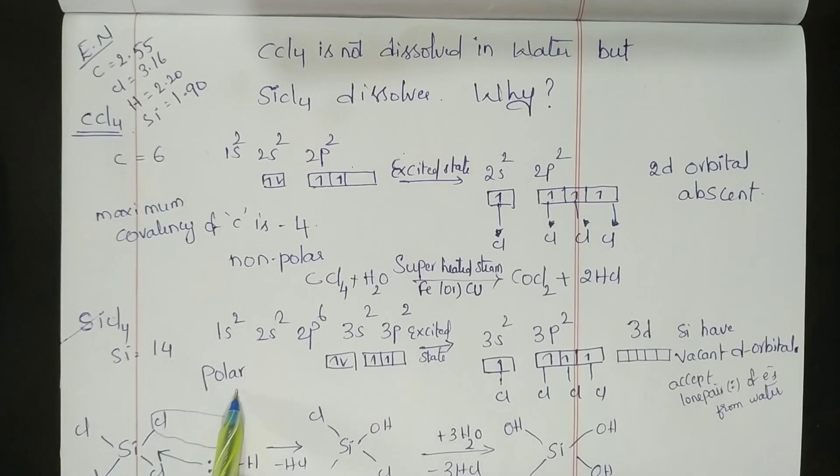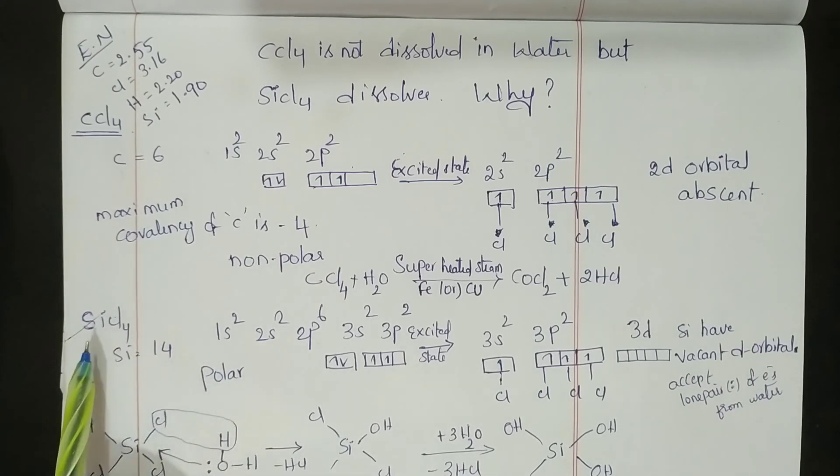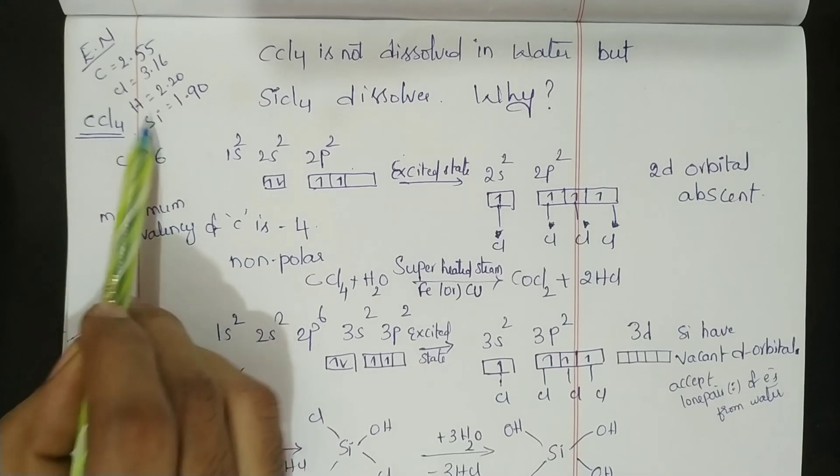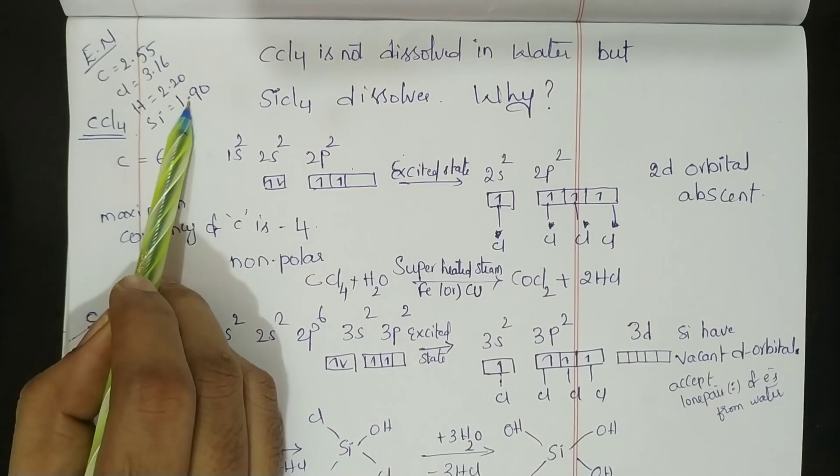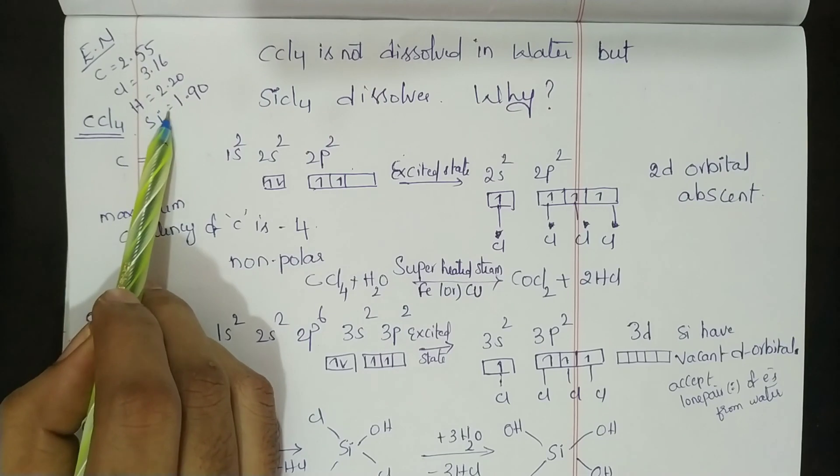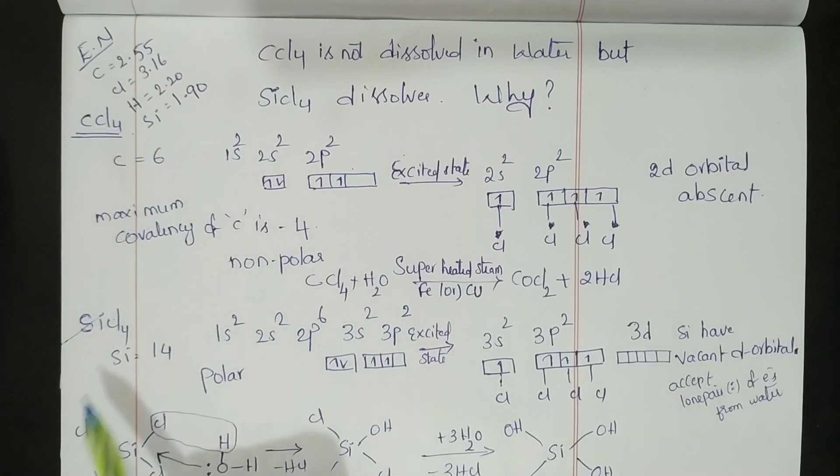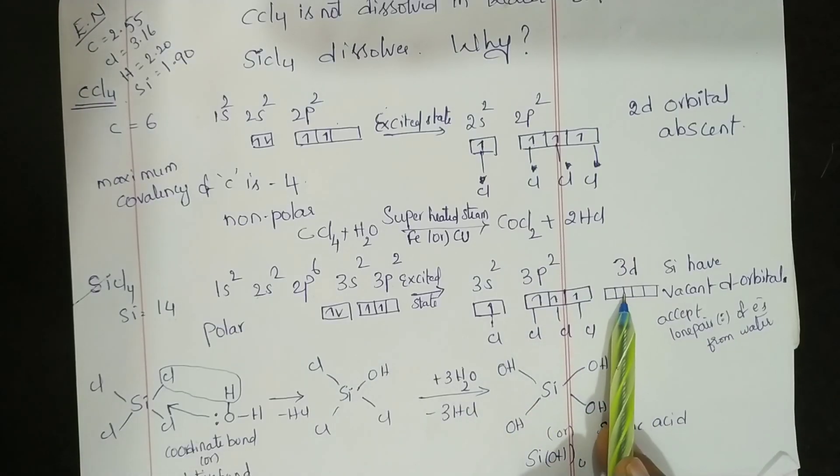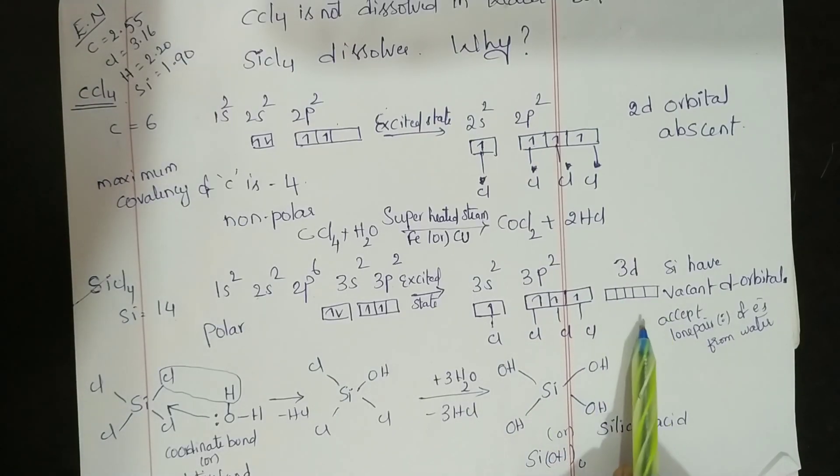One more difference is SiCl4 is polar because there is a large electronegativity difference between silicon and chlorine. This great electronegativity difference renders these bonds very reactive, so it can easily react with water, and the d orbitals of silicon accept lone pairs of electrons from water molecules.